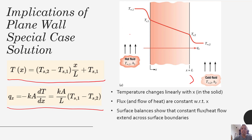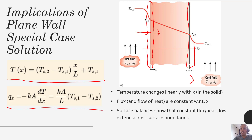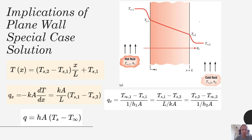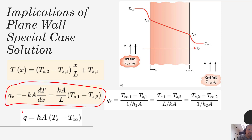If we did a surface energy balance on each side, just right at that surface, if this were a control surface we would see that the heat coming in by convection would be the same as the heat going out by conduction. Similarly, on the right side we could see that the heat coming in by conduction would be the same as the heat leaving by convection. So we could equate this conductive flow of heat to the convective flow of heat.